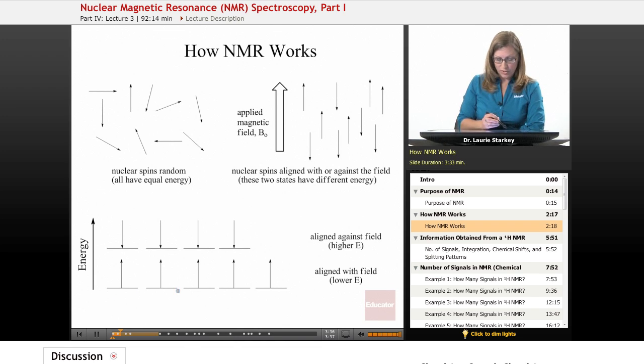The ones in which they're aligned with the field, we describe that as the alpha spin state, and those are going to be lower in energy. Those that are aligned against the field are described as beta, and those are higher in energy. Now the populations of nuclei in these two states is very similar, but there is a slight excess of the nuclei with the alpha spin state, where they're aligned with the magnetic field.